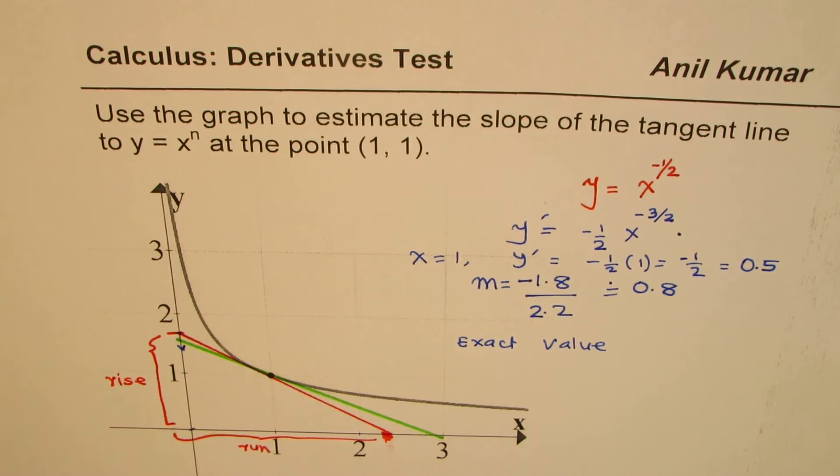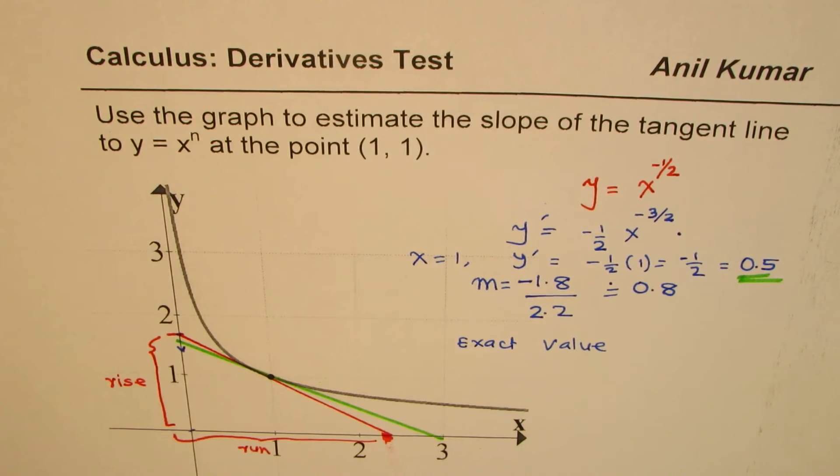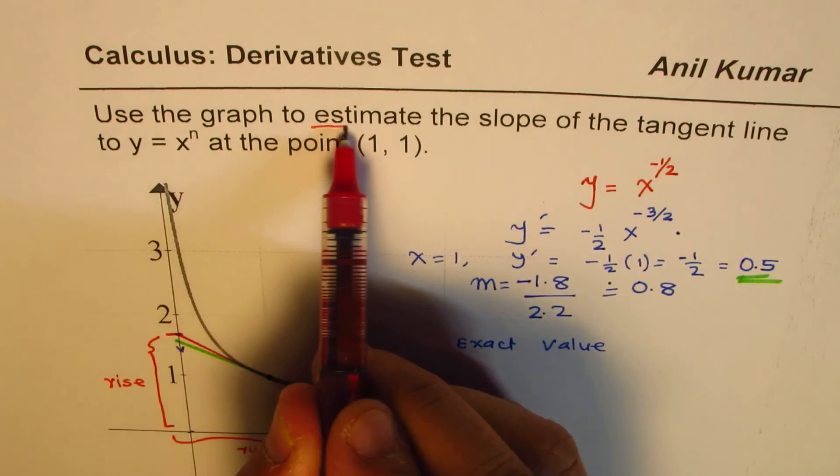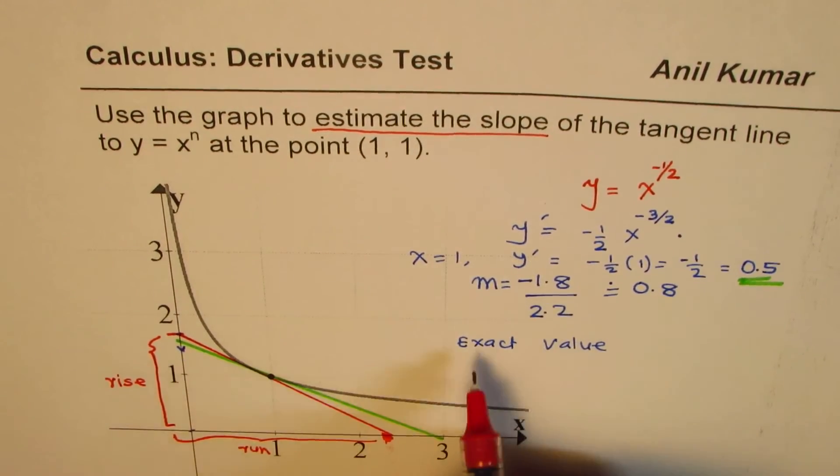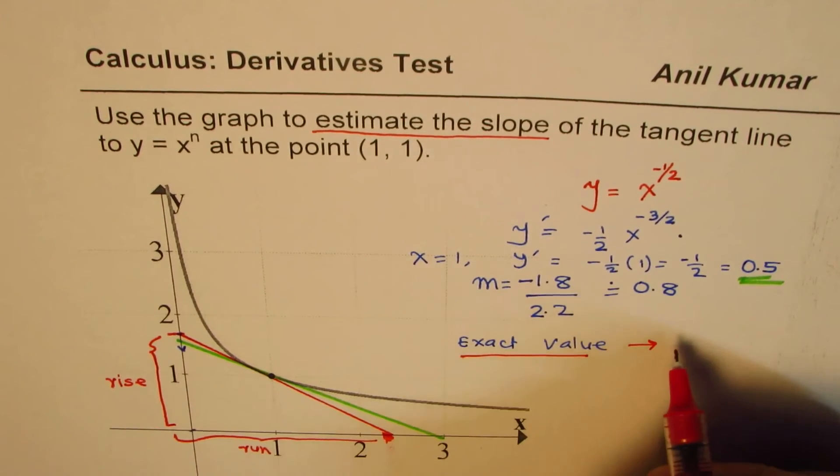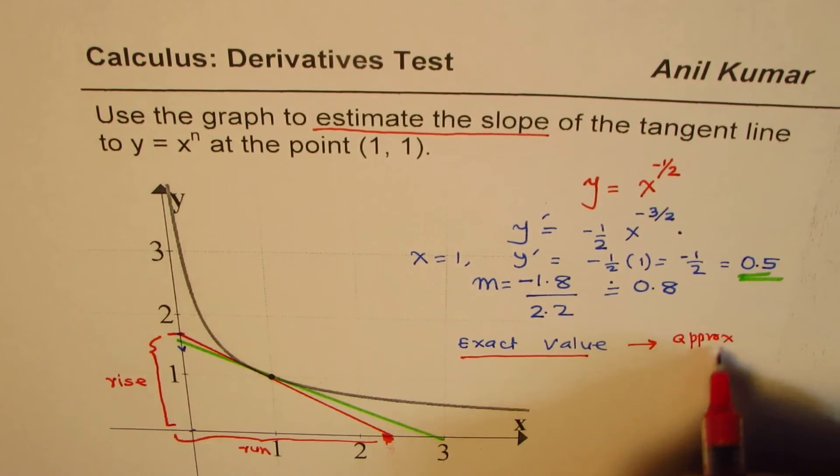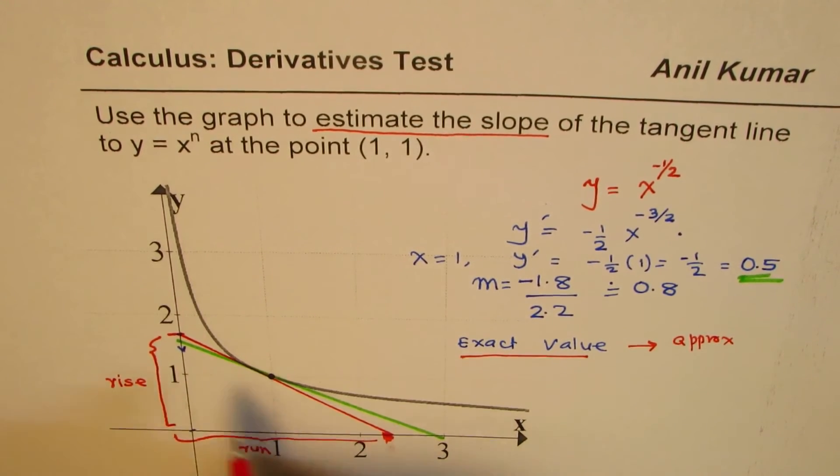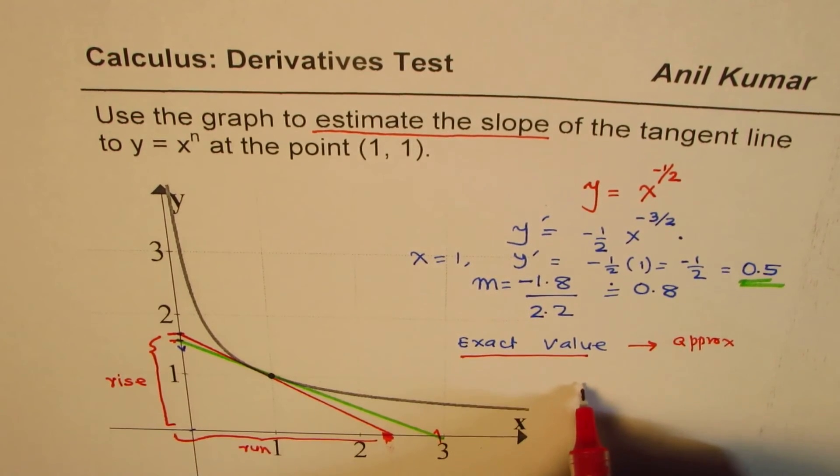So what you could do here is you could draw a line which could be something like this. And if you draw a line like this, you will definitely get a value which is closer to 0.5. The idea here is that when we're trying to calculate estimated slopes, the question is estimate the slope.